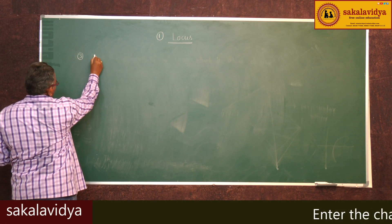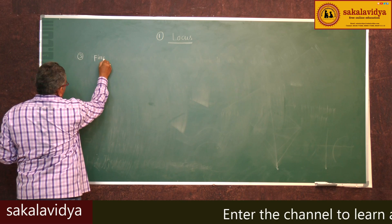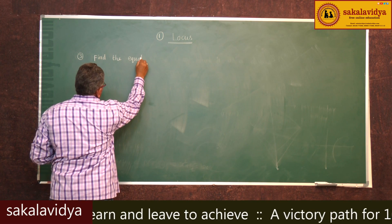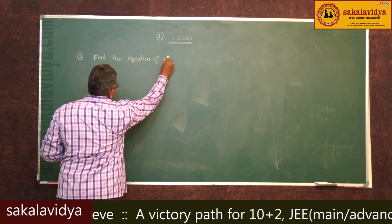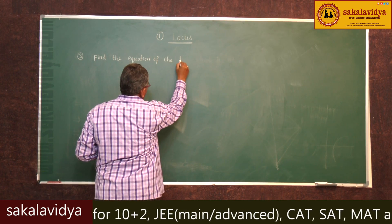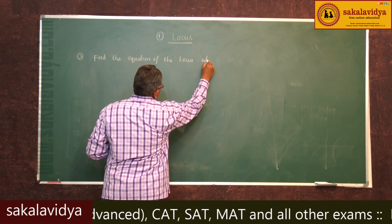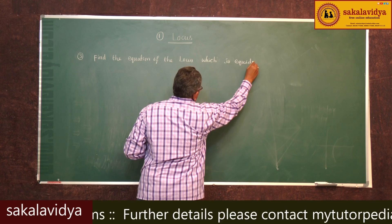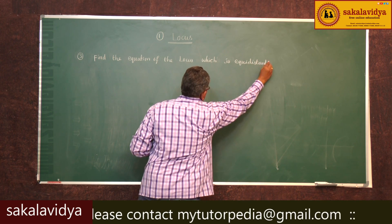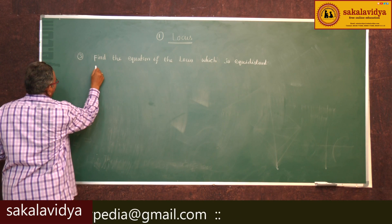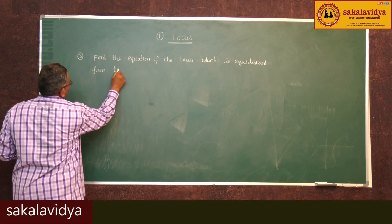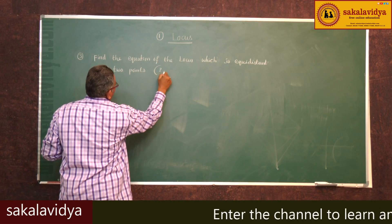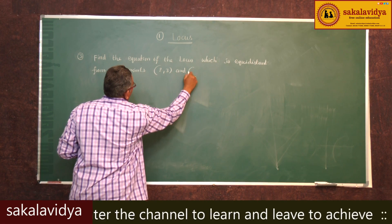Third problem: Find the equation of the locus which is equidistant from two points (2, 3) and (4, 5).